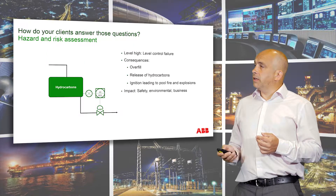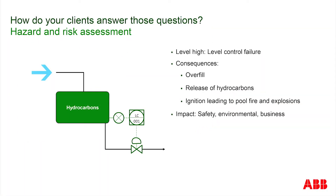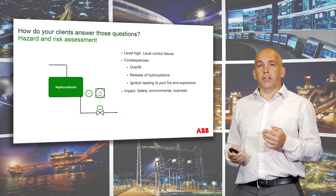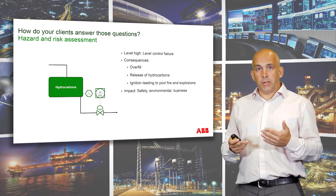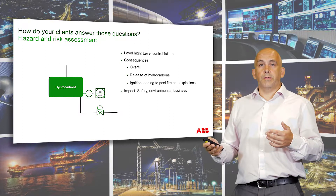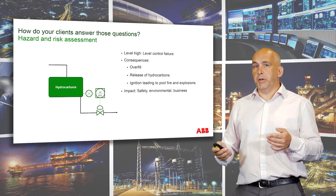To explain this, I'm going to use this simple example of a separator. We have flow coming in and flow going out. To control the level in that separator, we've got a level controller. So what can go wrong? Well, if we have a problem with that level controller, the level may rise. If it rises too high, we may overflow that particular vessel. If we overflow the vessel, then the hydrocarbons could flow and find a source of ignition. If it finds a source of ignition, then we could have a fire, maybe an explosion.